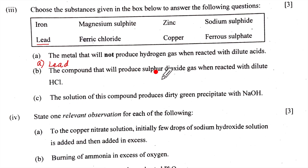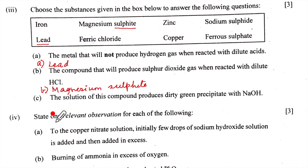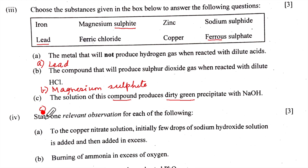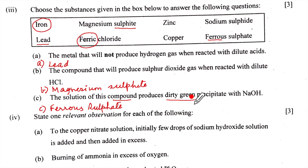B — the compound that produces sulfur dioxide when reacted with dilute HCl: sulfur dioxide comes from a sulfite; magnesium sulfide gives H₂S, but magnesium sulfite gives SO₂. The answer is magnesium sulfite. C — the solution that produces a dirty green precipitate with NaOH: dirty green precipitate indicates Fe²⁺, so the compound must contain Fe²⁺ — that is ferrous sulfate. Ferric chloride would give reddish-brown Fe(OH)₃, and metallic iron does not react with alkali.